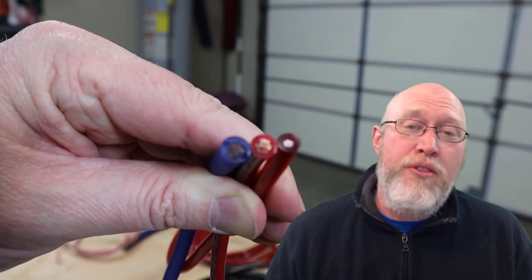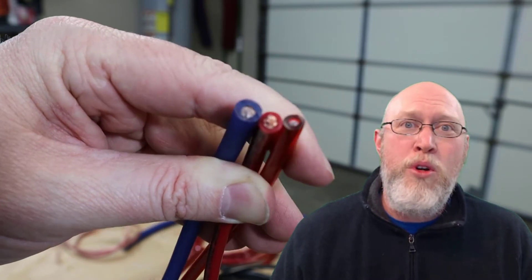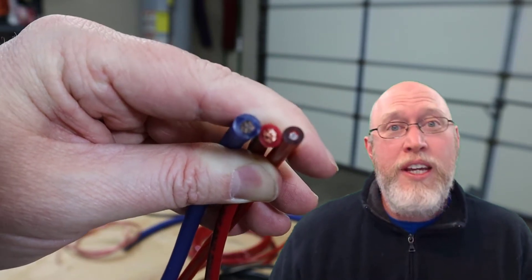OFC stands for oxygen-free copper. This is copper that's had the oxygen removed so that it doesn't corrode, so you're looking at about 99.99% pure copper wire. Whereas CCA stands for copper clad aluminum, and this is aluminum wire that has a copper coating on the outside of it.